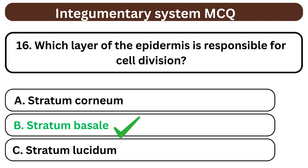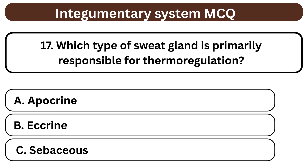Question 17. Which type of sweat gland is primarily responsible for thermoregulation? A. Apocrine. B. Eccrine. C. Sebaceous. The answer is B. Eccrine.